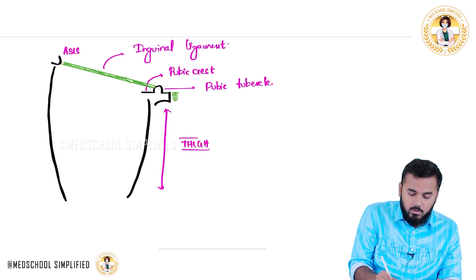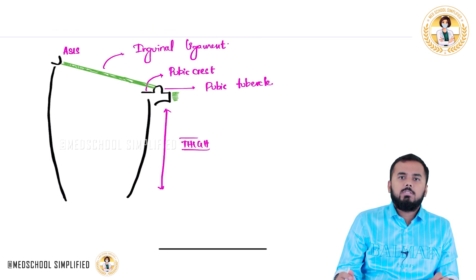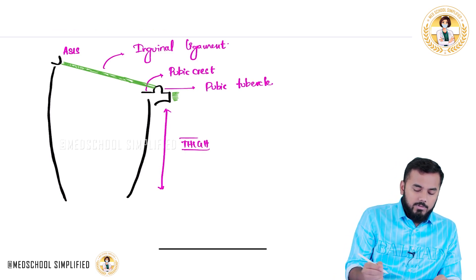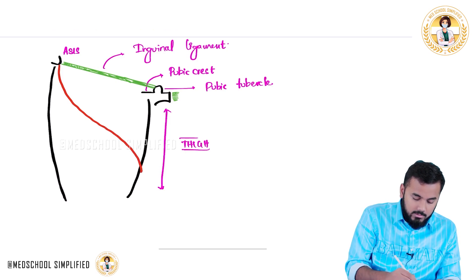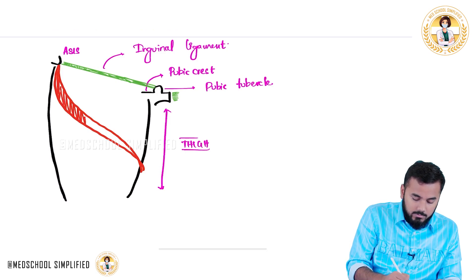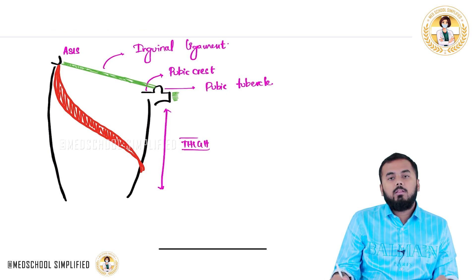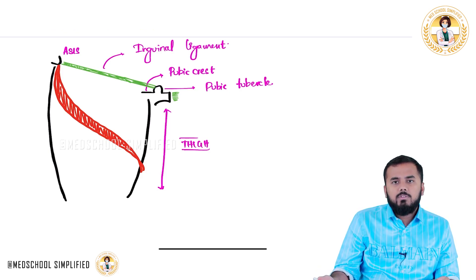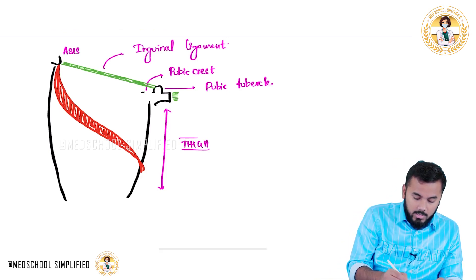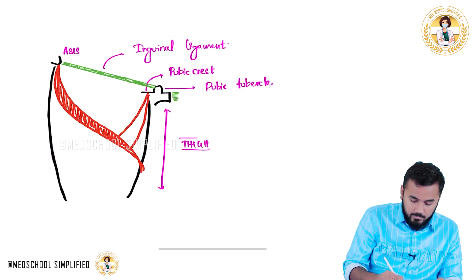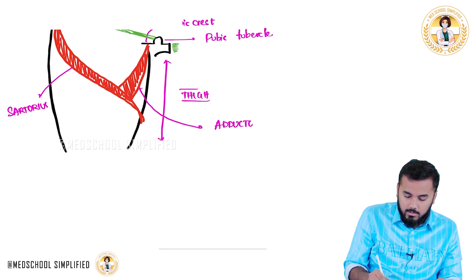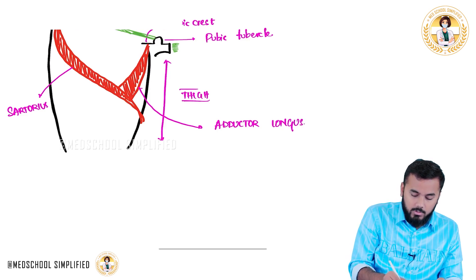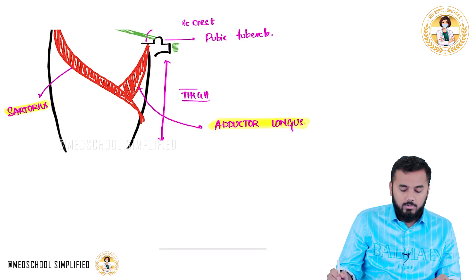I have already discussed the anterior and medial compartment muscles. In the anterior compartment, the first muscle starting from the anterior superior iliac spine is the sartorius. Sartorius comes all the way down like this. Medially, another important muscle is the adductor longus. So we have two muscles: sartorius and adductor longus.